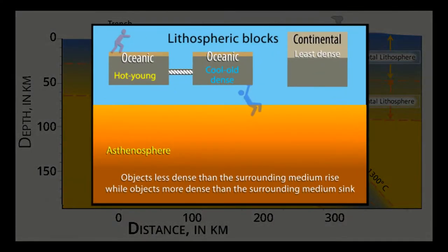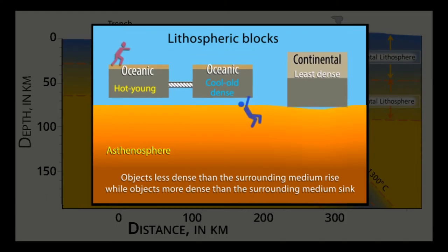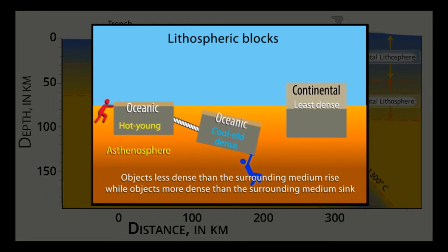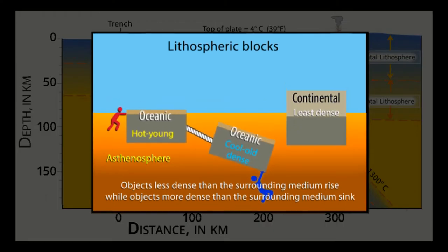While gravity pulls down on all rocks, it pulls down harder on more dense rocks. This enhanced gravitational force on the cooler and denser rocks in the subducting plate is the slab pull gravity force.